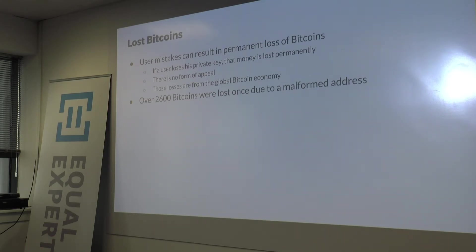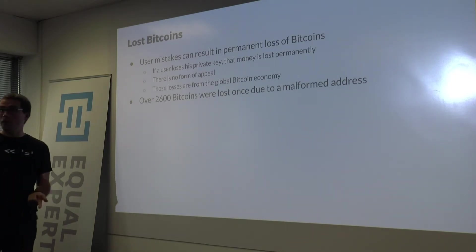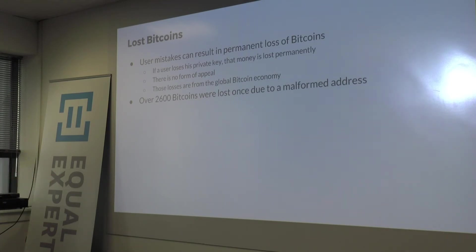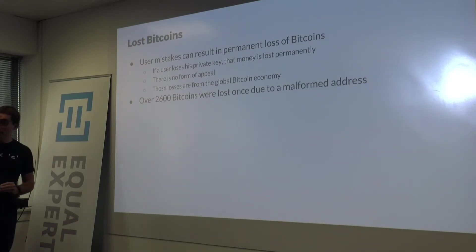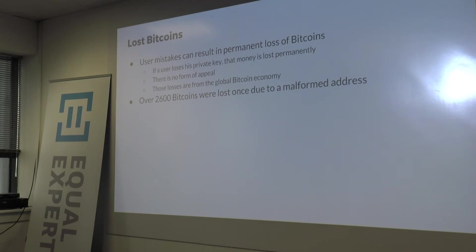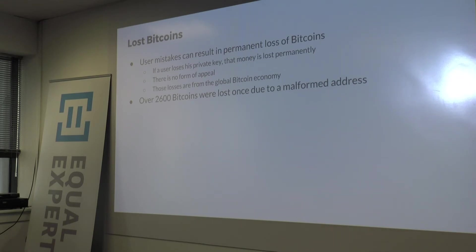There are lost Bitcoins, and it's quite easy to lose them. User mistakes can result in permanent loss — if a user loses their private key, those Bitcoins are gone forever. There is no recourse; we have no banks, no customer service to say 'I lost my money, please give it back.' Those Bitcoins are lost from the entire Bitcoin economy because no one has the private key to spend them. Also of note for developers: over 260 Bitcoins were lost due to a malformed address bug in software. People can write their own software to participate in the network, but be careful.